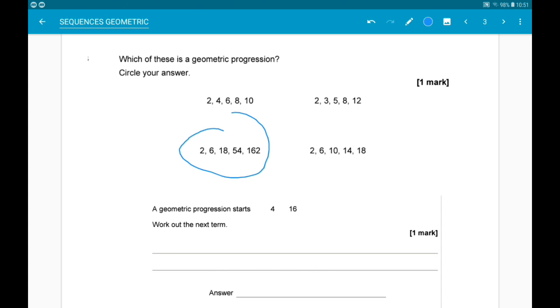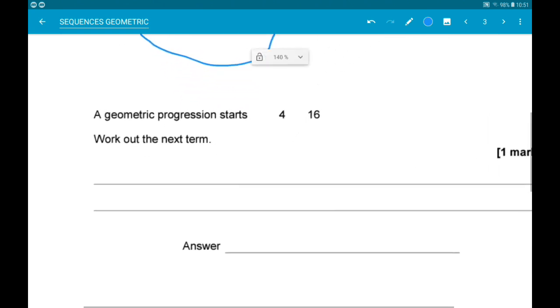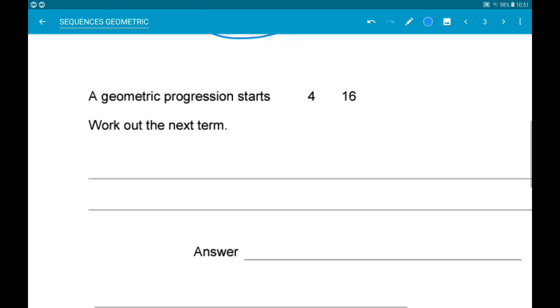Okay then, next up, a geometric progression starts 4, 16, work out the next term. So, to work out what we are multiplying by, we do 16 divided by 4,